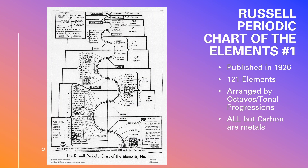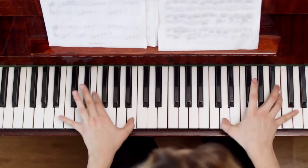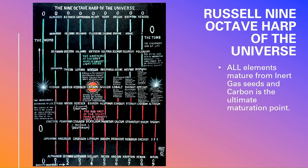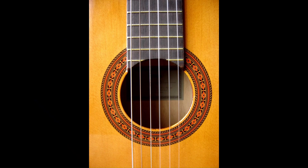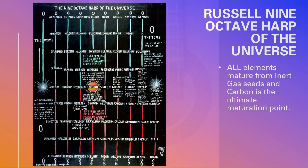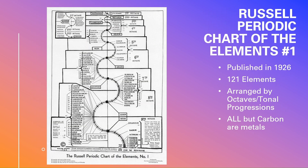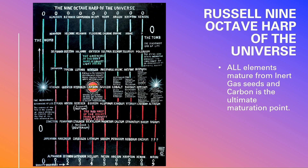Walter's version of an isotope would be a split tone like what you have between two white keys of a piano — you have a black key, which is a split in between them. Walter also gave us another way to look at his arrangement of the elements, which is as a nine-octave harp of the universe. We can look at this very much like the fretboard of a guitar, and notice that carbon is in the exact midpoint — exactly four and a half octaves to carbon from the first octave, and exactly four and a half octaves from the middle of the ninth back to carbon.